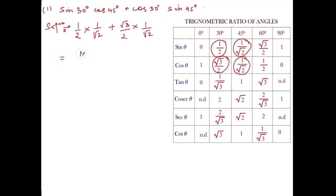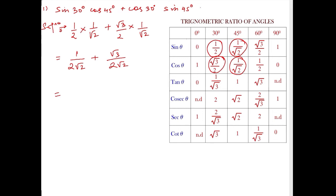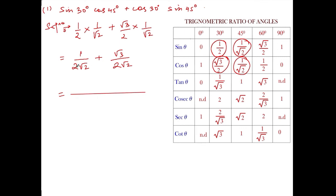1 into 1 is 1, and 2 into root 2 will be 2 root 2. Plus, root 3 into 1 will be root 3, and 2 into root 2 will be 2 root 2. Now draw a line and take the LCM — 2 root 2 and 2 root 2. Write down 2 root 2 as the denominator. Since the denominators are the same for both, the numerator is just 1 plus root 3. So the answer is (1 + √3) / (2√2). That's all, thank you so much, we will meet in the next video.